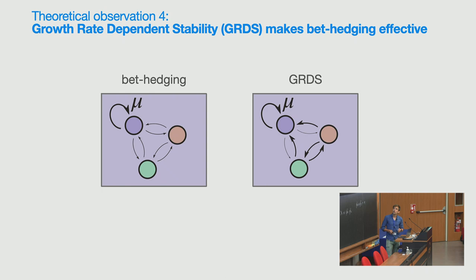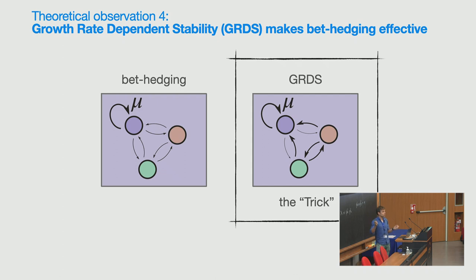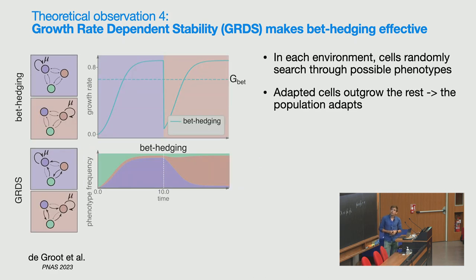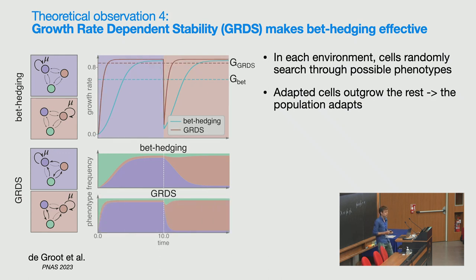Now how do I put this in my model? I had this bet hedging model and now I can say I can just change one thing. Whenever you're not growing, you're going to switch a bit more, right? Which seems reasonable given the experimental observations that we have. But I will tell you that this is in fact the trick that makes life a lot easier for the microbes. So how does this work? Well, we have this system and we saw that bet hedging alone could make a population adapt. But now the picture drastically changes. If we introduce this growth rate dependent stability as we call it, the adaptation of the population to a new environment is much faster. And it also goes to a higher final growth rate.